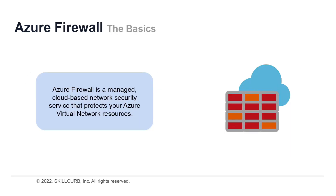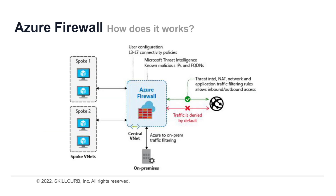Azure Firewall is a managed cloud-based network security service that protects your Azure virtual network resources. It is a fully stateful firewall as a service with built-in high availability and unrestricted cloud scalability. You can centrally create, enforce, and log application and network connectivity policies across subscriptions and virtual networks. Azure Firewall uses a static public IP address for your virtual network resources, allowing outside firewalls to identify traffic originating from your virtual network. The service is fully integrated with Azure Monitor for logging and analytics.